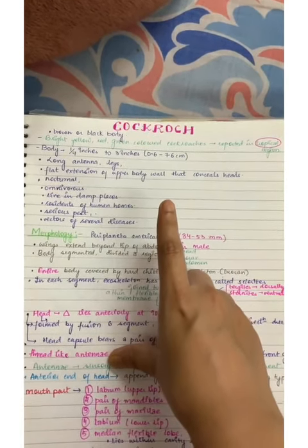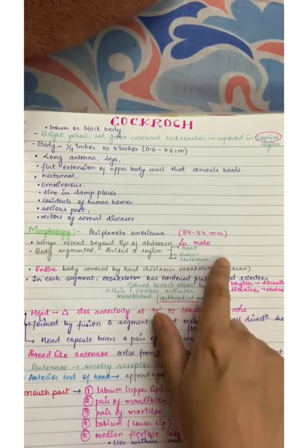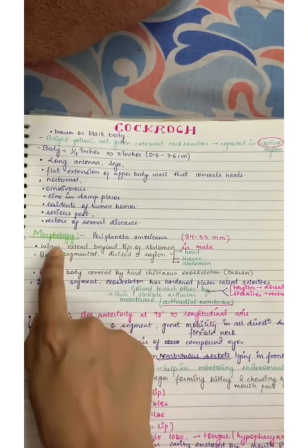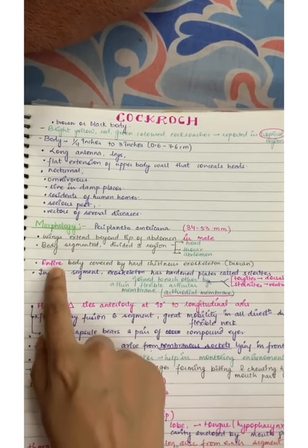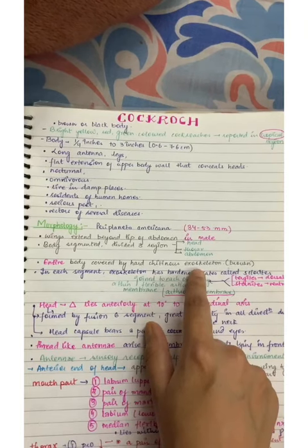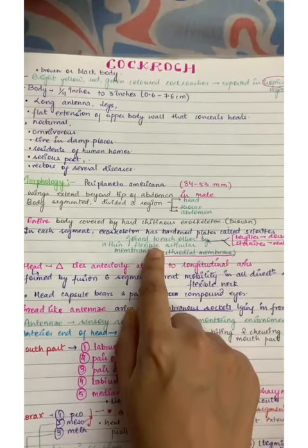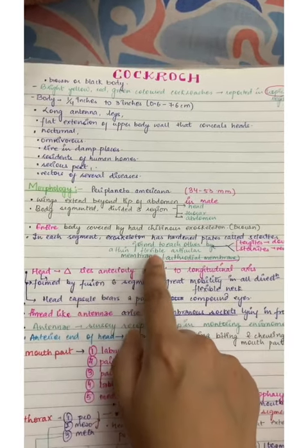See, cockroach is orthoptera. Orthoptera is a general feature, so you should remember this. This entire body is covered by chitinous exoskeleton. This is also common point.